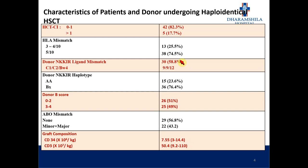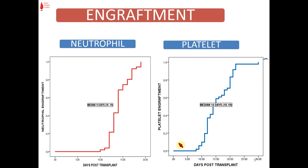We also looked at the NK-KIR haplotype, and 77% of patients had haplotype B. 50% of patients had a high B score, and 43% had major and minor ABO mismatch blood groups. The median CD34 count in the graft was 7.75, varying from 3 to 14.4. Engraftment was not a problem; the median days to neutrophil and platelet engraftment was 14 days.